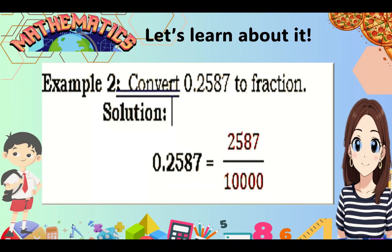Example number 2: Convert 0.2587 to a fraction. The decimal number becomes our numerator. Count the number of decimal places: 1, 2, 3, 4 — that should equal the number of zeros in our denominator. So our answer is 2,587 over 10,000 in fraction form.